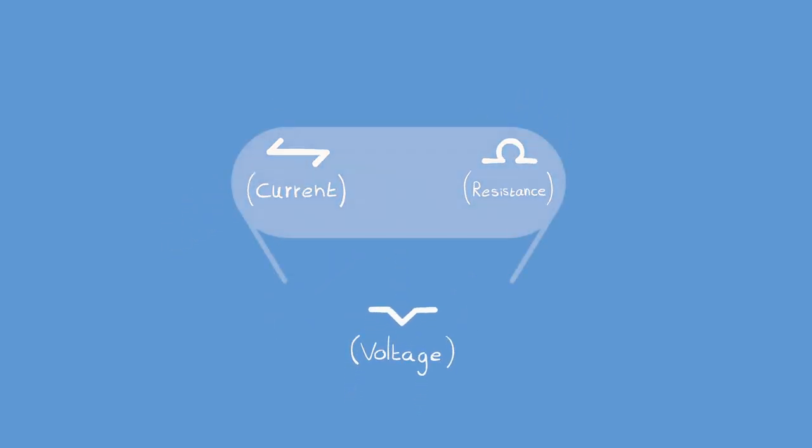Actually, if you know any two of these three, you can work out the other one. So if you make a thicker wire, it will have less resistance, so more current will flow for the same voltage.